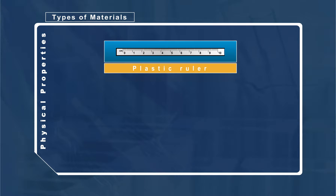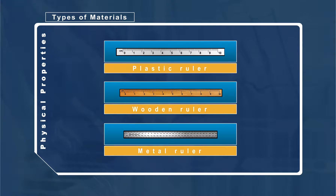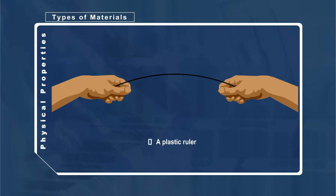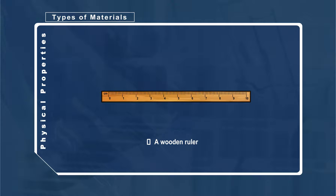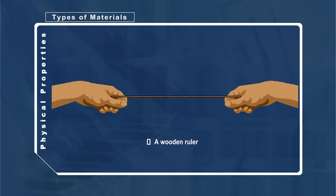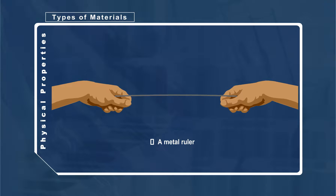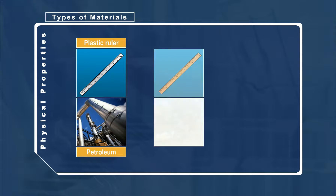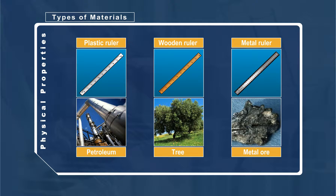Take a plastic ruler, a wooden ruler, and a metal ruler. Try to bend each ruler — which is the easiest to bend? Which is the hardest to bend? Each object is made from a different material. How easily an object bends depends on the qualities or characteristics of the material. These qualities, such as hardness and flexibility, are the properties of the materials.